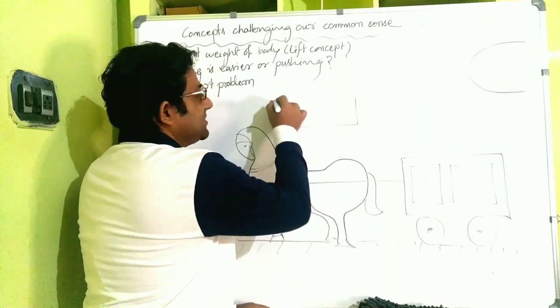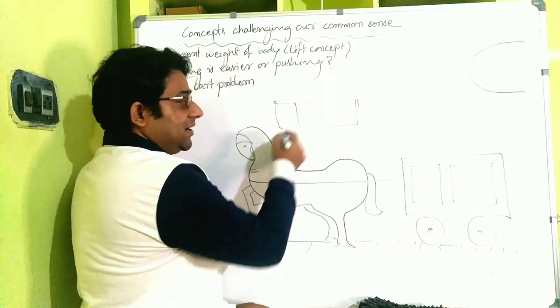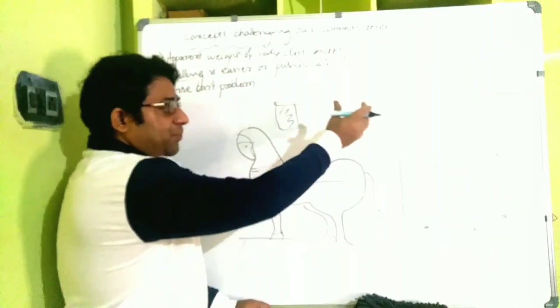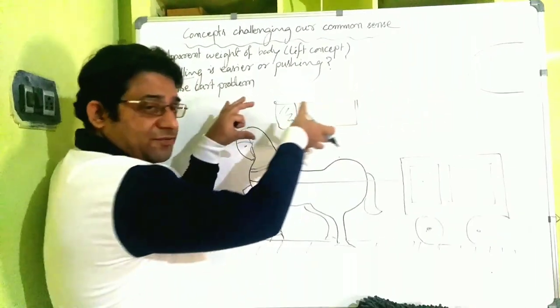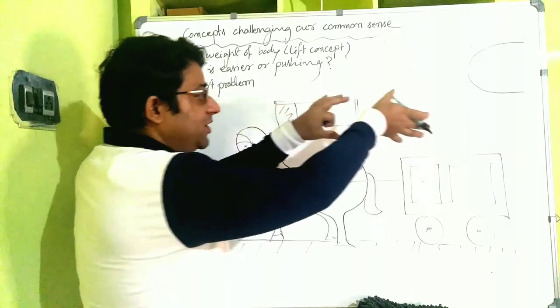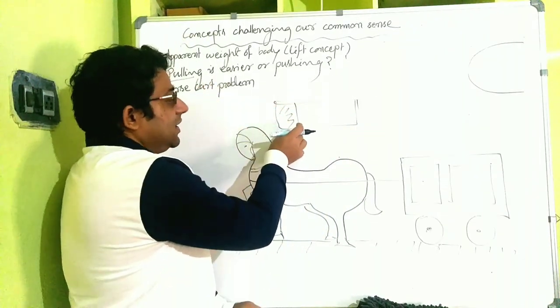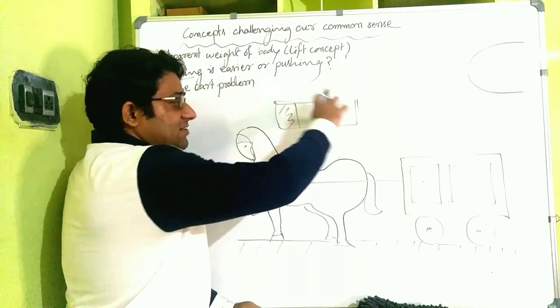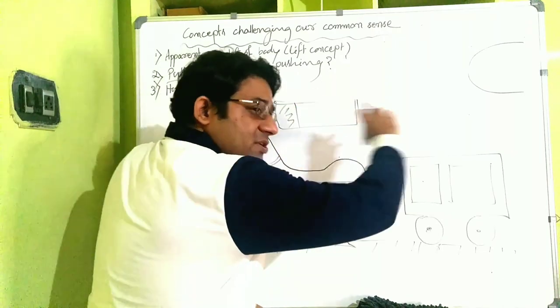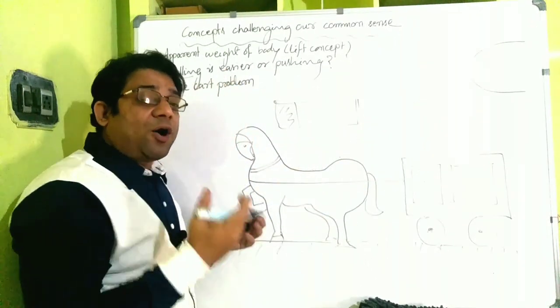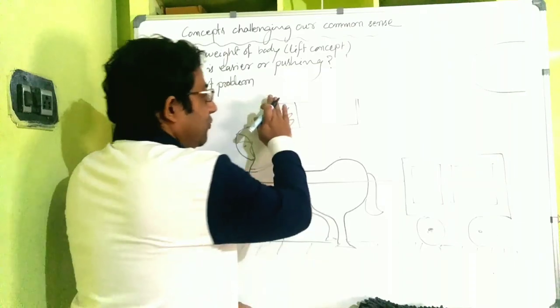Let's say this engine pulls the entire body of the train, right? The entire body of the train. Now the thing is, the engine pulls it, but at the same time this body also is pulling the engine back, right? Then how is the motion being possible?